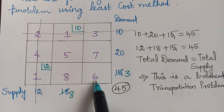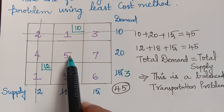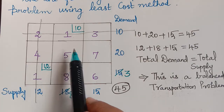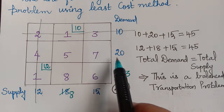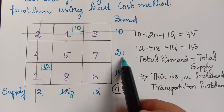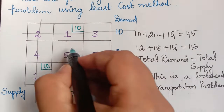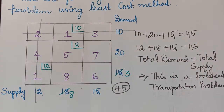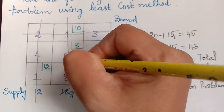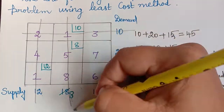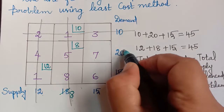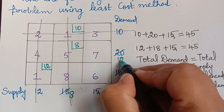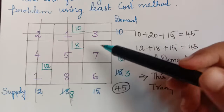From the remaining four cells, the minimum value is 5. We give the allotment for this cell. The demand is 20 and the supply is 8 — the minimum is 8. So we give the allotment of 8, completely strike off that column, and subtract 8 from 20, leaving a remaining demand of 12.